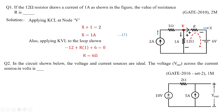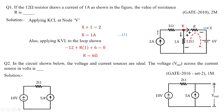In the second question, a circuit is shown where the voltage and current sources are ideal — you have 10 volts and 5 amperes. We need to find V_out, the voltage across the current source, in volts. This is a GATE 2016 Set 2 paper problem allotted 1 mark, because it is a simple single-loop circuit.